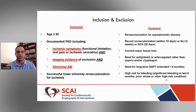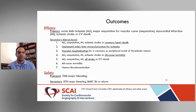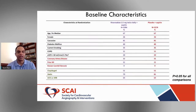Inclusion criteria required documented PAD and age over 60. Multiple exclusions included recent revascularization, major tissue loss, need for long-term DAPT, and high bleeding risk. The primary endpoint was the five-component composite; safety endpoints included TIMI major bleeding, ISTH definitions, and BARC type 3b or above. Baseline characteristics showed no significant difference between the two arms — a very high-risk population with 40% diabetics.